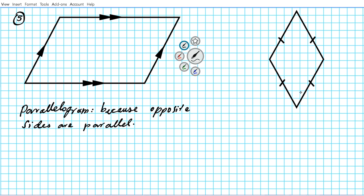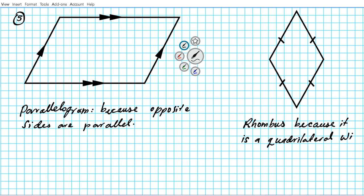Number six — we notice that all four sides are the same. It's equilateral, just like a square, but it's squished. This quadrilateral is a rhombus. It's a rhombus because it has four congruent sides — it is an equilateral quadrilateral. So an equilateral quadrilateral is a rhombus, or a squished square.